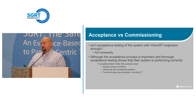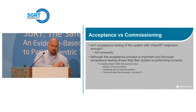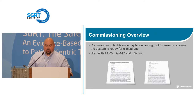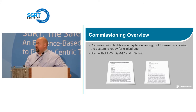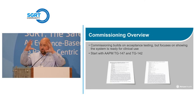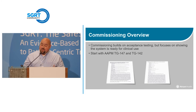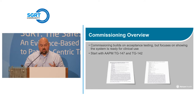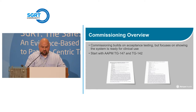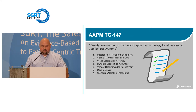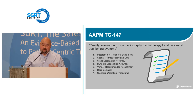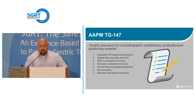You need to hold the vendor accountable to make sure systems interface correctly — that's part of commissioning, as are treatment planning processes. Showing that something from CT can be accurately delivered on the machine is the ultimate goal. TG-147 has very good surface-guided optical tracking guidelines, and TG-142 covers general QA guidelines for all machines. Just because something isn't in the guidelines doesn't mean you skip it — you may need to go above and beyond or combine tests.